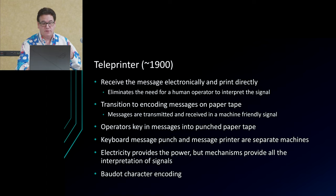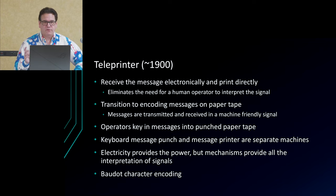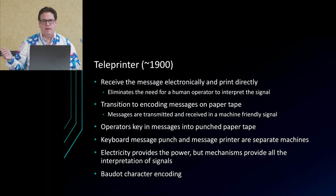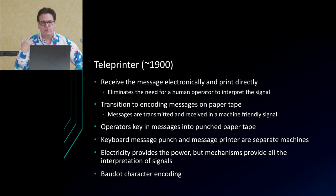The teleprinter receives an electrical signal that encodes characters with marks and spaces, then selects a character from a font and prints it on tape. On the input side, an operator keys in a message and punches the tape, which is then inserted into a reader for transmission. Now they can send many more messages because the messages are pre-punched, and the transmission rate is only limited by how fast the reader can send messages.